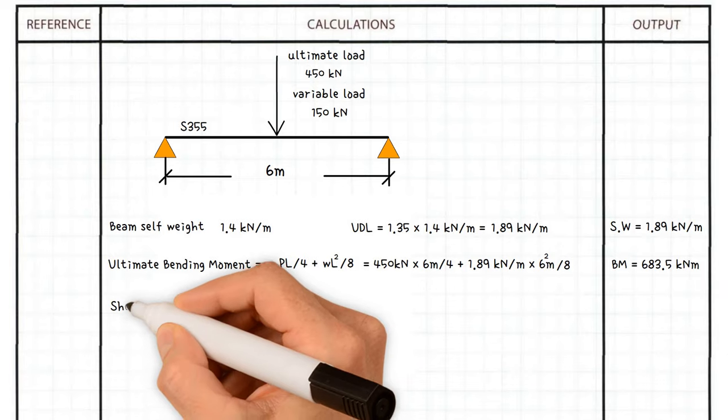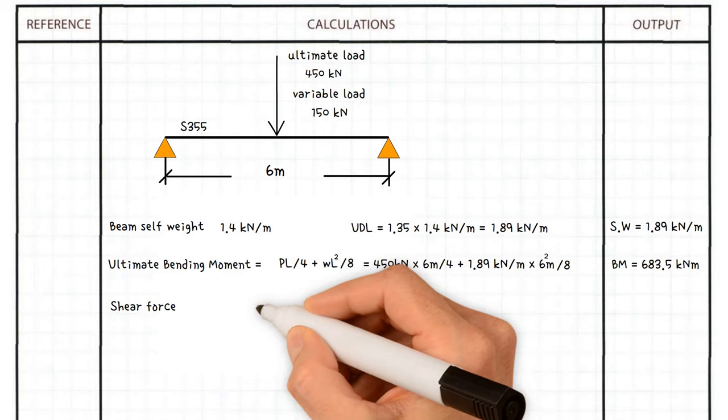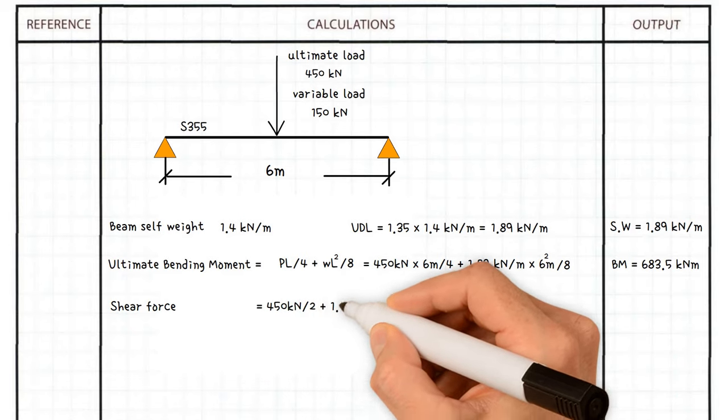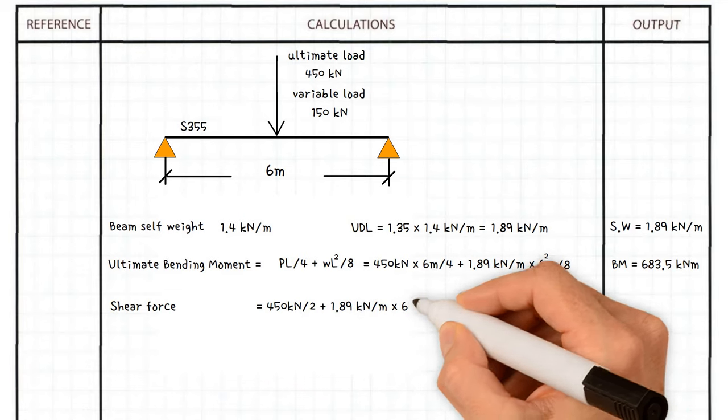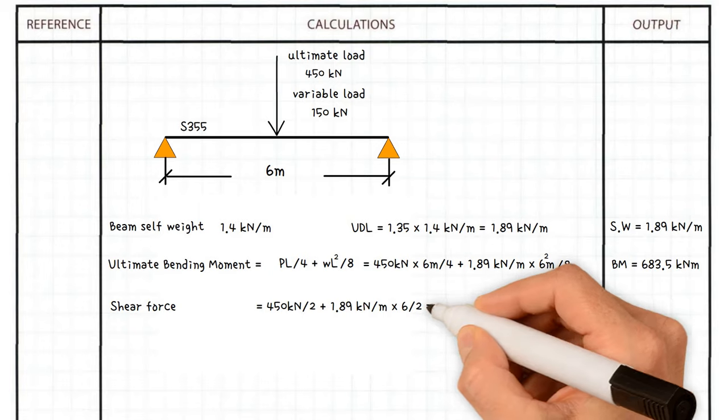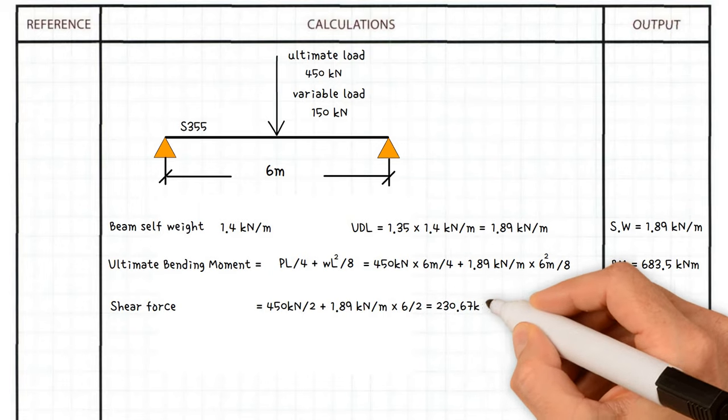We also need to find out the shear force, which equals 450 kilonewtons over 2 plus 1.89 kilonewtons per meter times 6 meters over 2. This corresponds to a value of 230.67 kilonewtons.